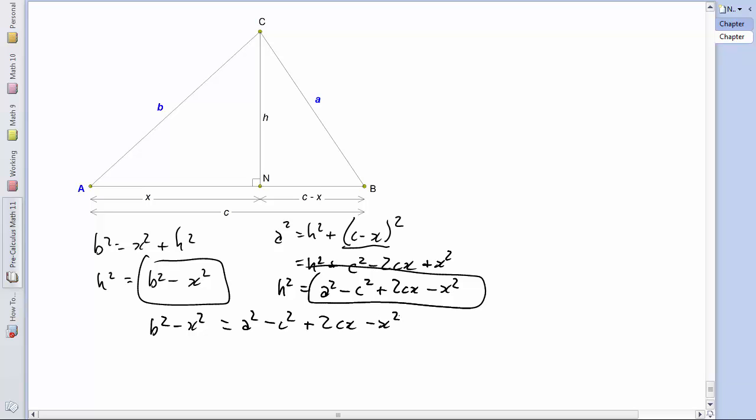Now, if you recall, the goal was to solve for A, so let's isolate A squared here. Also notice that on both sides we have minus X squared, so if we add X squared to both sides, these will cancel out. Solving for A squared now, we get A squared is equal to B squared plus C squared minus 2CX. And this is pretty good, except we've still got that X value in there, and I really want to get rid of that.